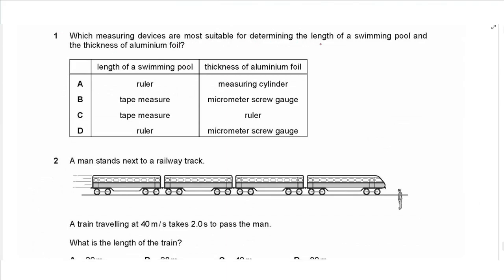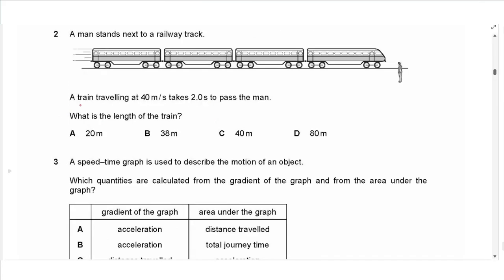Question 1 asks which measuring devices are most suitable for determining the length of a swimming pool and the thickness of aluminium foil. For the length of a swimming pool, that's a measuring tape or tape measure because it's more than one meter. For the thickness of aluminium foil, foil is very thin, so it's most appropriate to use a micrometer screw gauge, making the answer B.